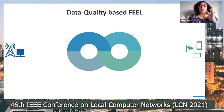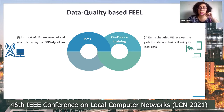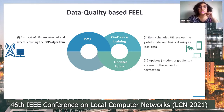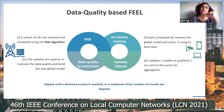To put all the pieces together, the data quality based federated edge learning works as follows: we schedule a subset of UEs using the DQS algorithm; each scheduled device trains the model locally; each device sends its model gradient along with local accuracy and dataset diversity indicator to the MEC server; the server reevaluates reputation, recalculates data quality, and builds a new global model. This repeats until a desired accuracy is reached or a maximum number of rounds has elapsed.